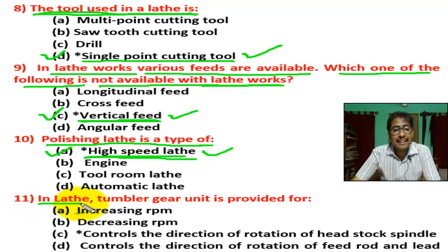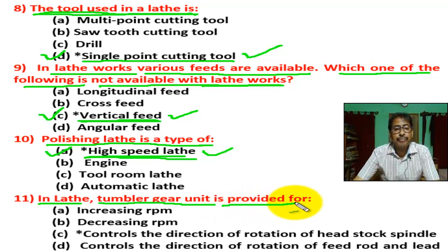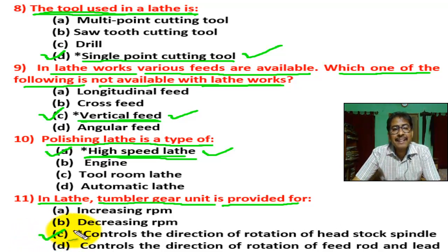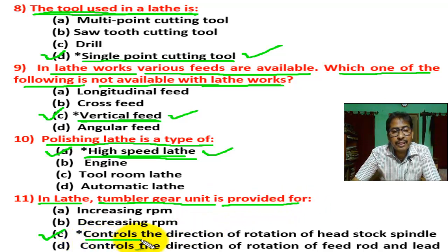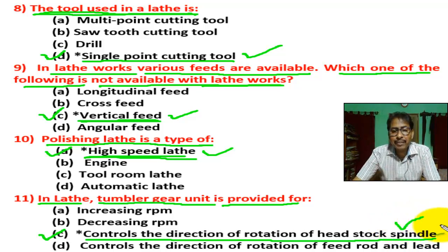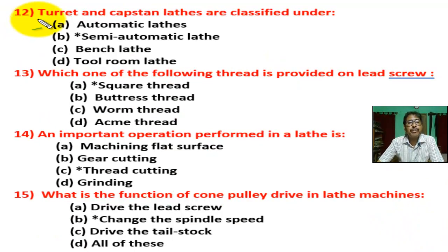In lathe, the tumbler gear unit is provided for? There are four options. Correct answer is C — the tumbler gear unit is provided to control the direction of rotation of the headstock spindle.